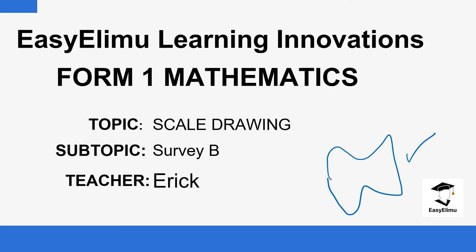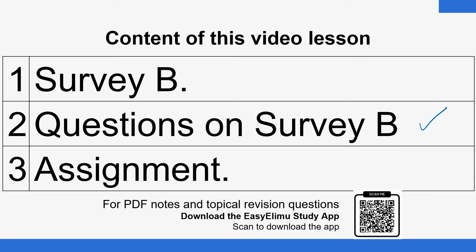How to extract measurements — the measurements obtained during the surveying process and recorded in the surveyor's field book. We want to see how we're able to extract that information from the surveyor's field book to have a sketch of the same piece of land and then find the area. At the end of the lesson, we'll have some questions in the form of an assignment to help you practice and gauge your understanding of the concept.